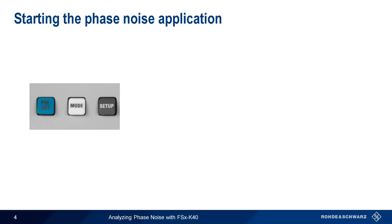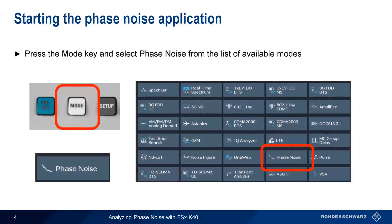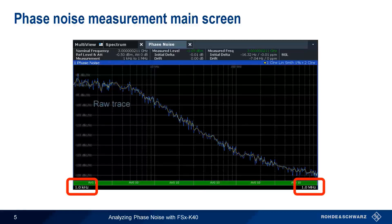To start the phase noise application on the FSW, simply press the Mode key and then select Phase Noise from the list of available modes. If the center frequency and reference level are already correctly configured, the application will automatically run and display results in graphical form. By default, phase noise is measured over the offset range of 1 kHz to 1 MHz, and results are given as both raw and smoothed traces of single sideband phase noise.